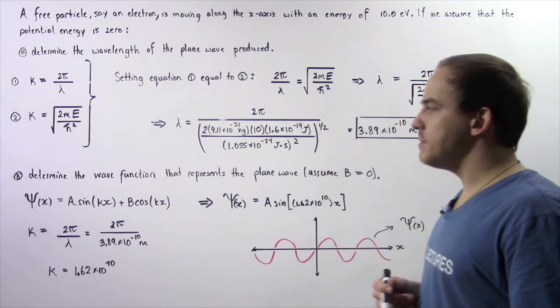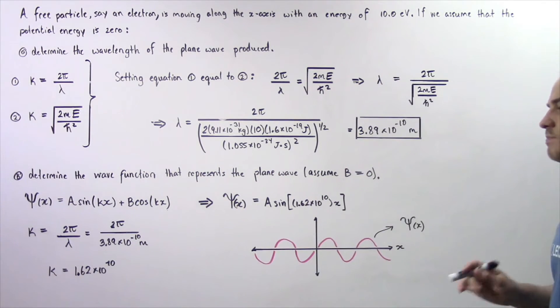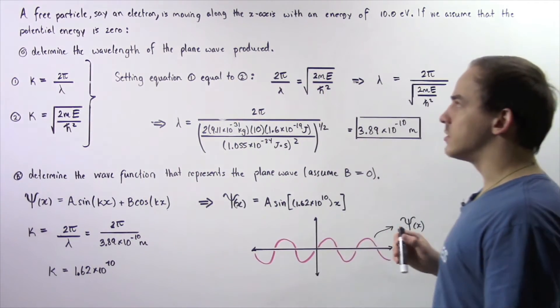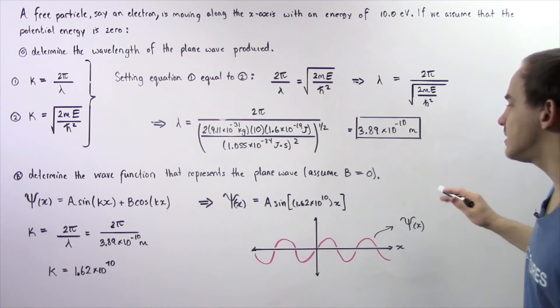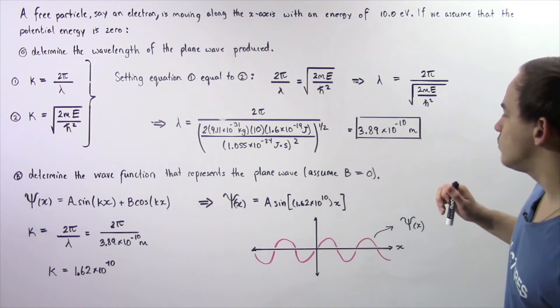Now let's move on to part b. In part b, we want to determine the wave function that represents the plane wave produced by our free particle. We're assuming b, our constant that appears in the wave function equation, is equal to 0.